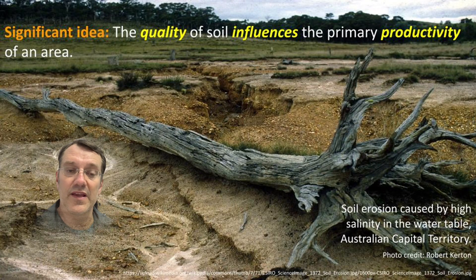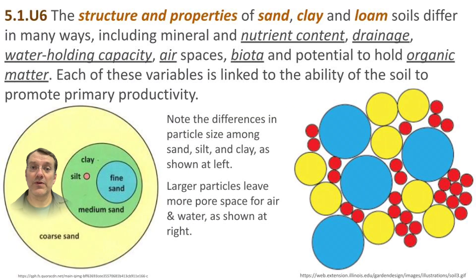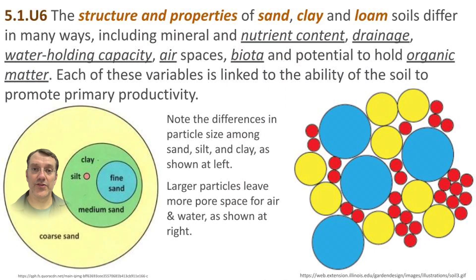The other big idea in this topic is that the quality of soil influences the productivity of an area. There are three main soil particles you need to know about: sand, silt, and clay. As you see on the screen, sand is the largest particle, silt is a smaller particle, and clay is represented by a single pixel on the screen.